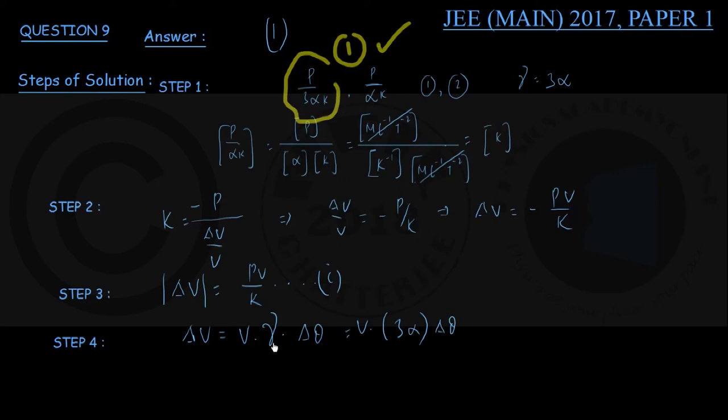Once again here, the volume coefficient gamma is thrice the linear coefficient, which is alpha. Therefore, we are getting the increase in volume under heating should be delta V equals 3 V alpha into delta theta. This is my equation number 2.